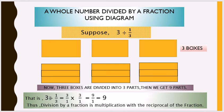We can write 3 as the fraction 3 by 1, since a whole number can be converted into a fraction by placing it over 1. So the fraction of 3 is 3 by 1. We multiply by 3 by 1, which is the reciprocal of 1 by 3. Here 3 is the dividend and 1 by 3 is the divisor. Taking the reciprocal of the divisor, we get 3 by 1 into 3 by 1, which gives 9 by 1, that is equal to 9. Thus division by a fraction is multiplication with the reciprocal of the fraction.